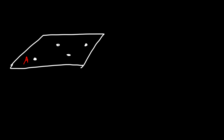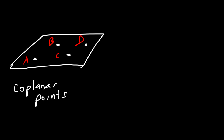If we have four points that lie on the same plane, let's call them points A, B, C, and D — these four points are known as coplanar points because they share the same plane. Let's call this plane X.